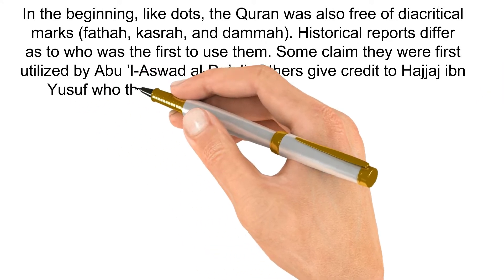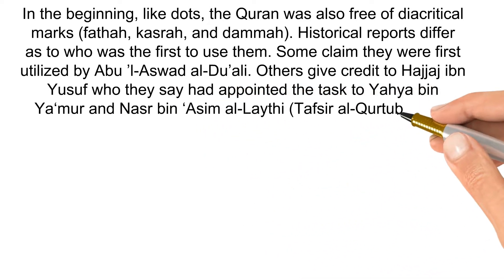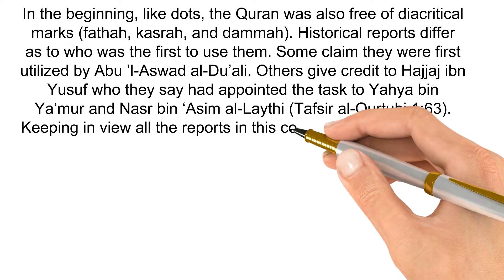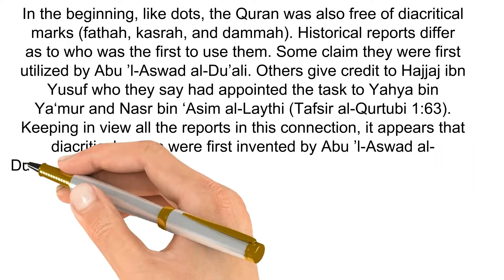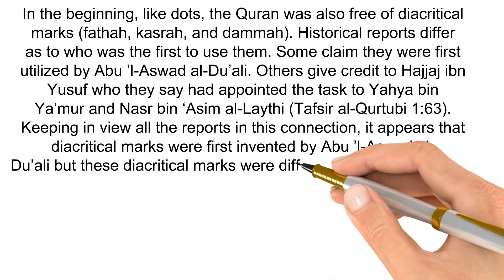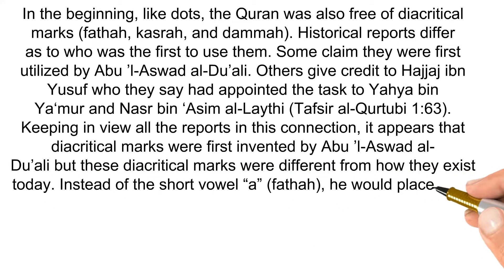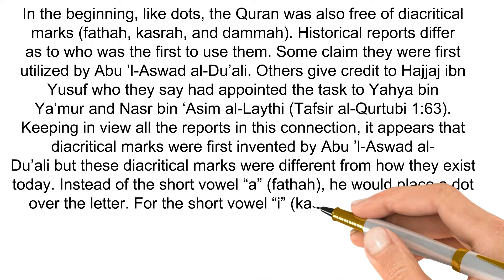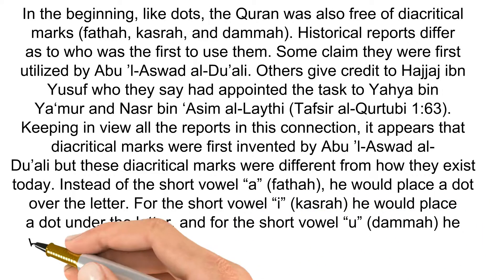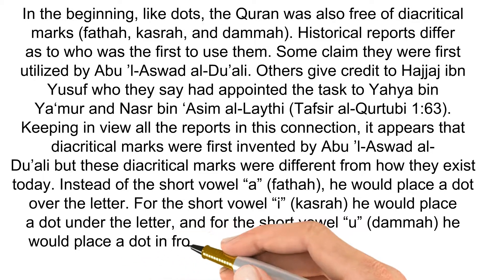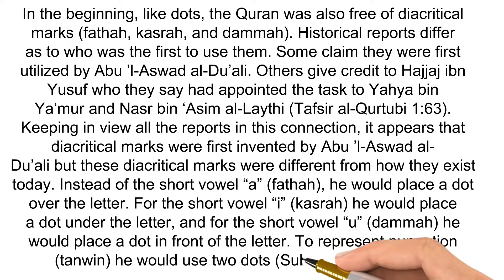Others give credit to Hajjaj ibn Yusuf, who they say had appointed the task to Yahya ibn Ya'mur and Nasr ibn al-Asim al-Laythi. Keeping in view all the reports in this connection, it appears that diacritical marks were first invented by Abu al-Aswad al-Duali. But these diacritical marks were different from how they exist today. Instead of the short vowel A (Fathah), he would place a dot over the letter. For the short vowel E (Kasrah), he would place a dot under the letter. And for the short vowel U (Dhamma), he would place a dot in front of the letter. To represent the Tanwin, he would use two dots.